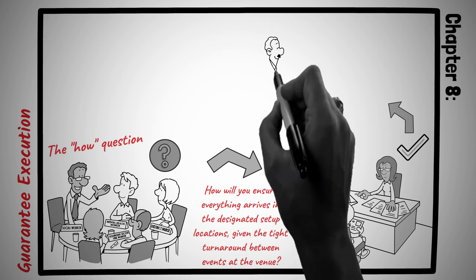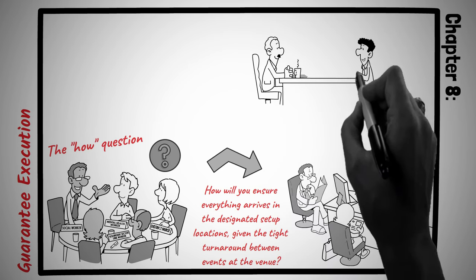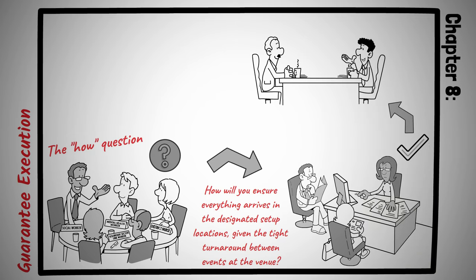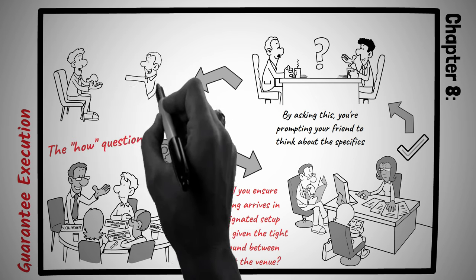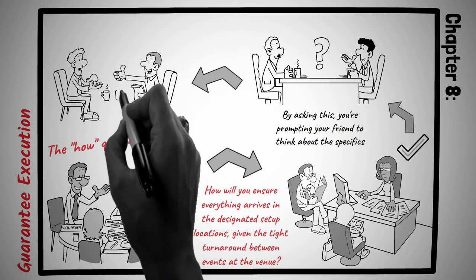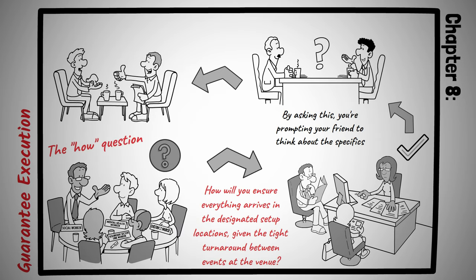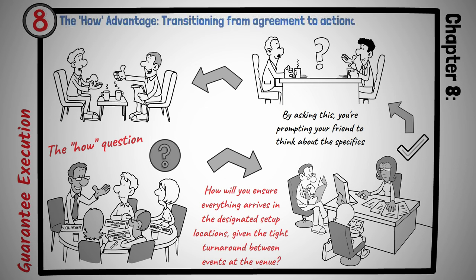Imagine you and a friend are planning a weekend getaway. You both decide to share responsibilities. Instead of assuming your friend will remember everything, you inquire, How do you plan on managing the food supplies for the camping trip? By asking this, you're prompting your friend to think about the specifics, such as shopping lists, quantities, and dietary preferences, making it more likely that nothing essential will be overlooked. Whether in business negotiations or everyday arrangements, prompting with the how question can be transformative. It navigates the conversation from mere commitment to a space of clarity, preparation, and heightened responsibility. Principle number eight is the how advantage, transitioning from agreement to actionable commitment.